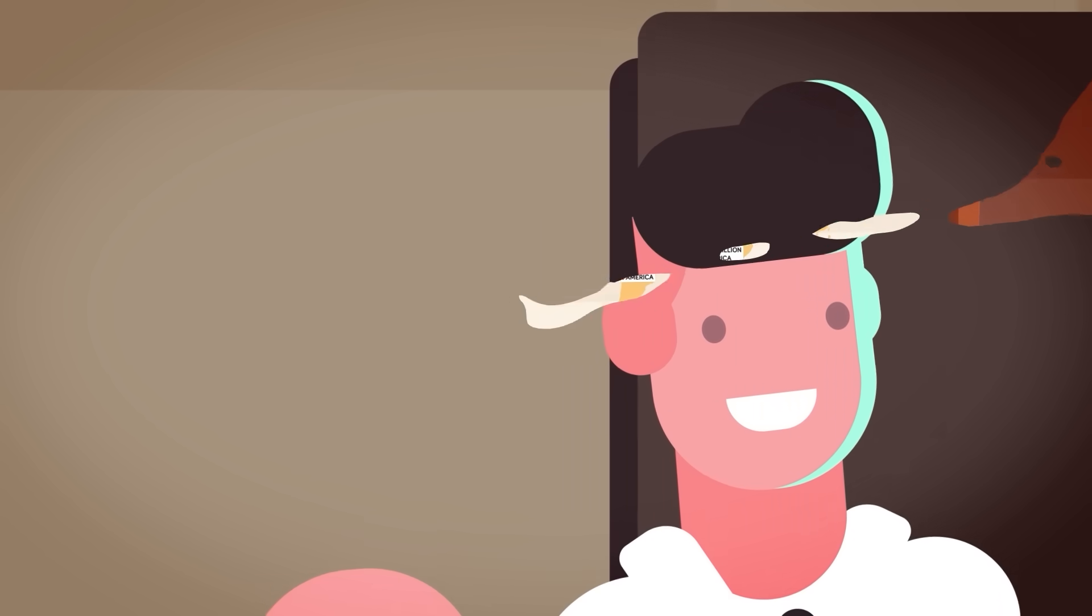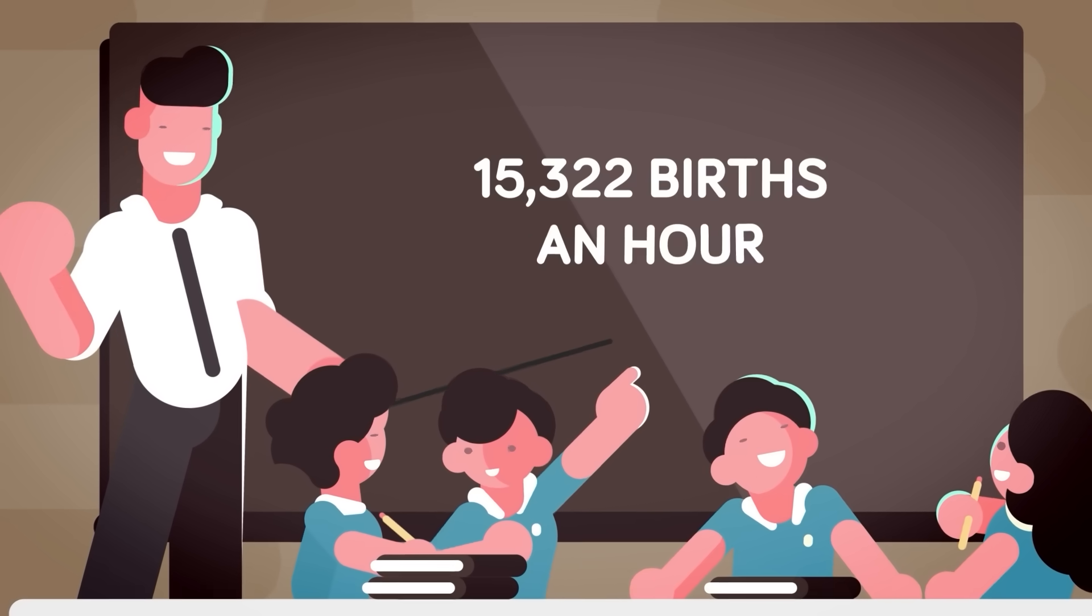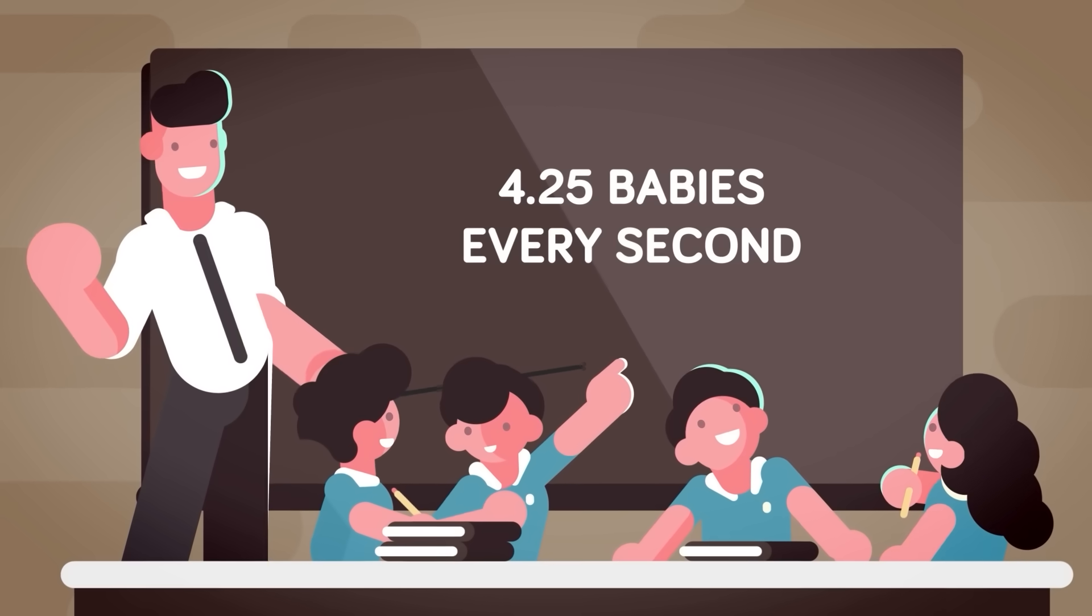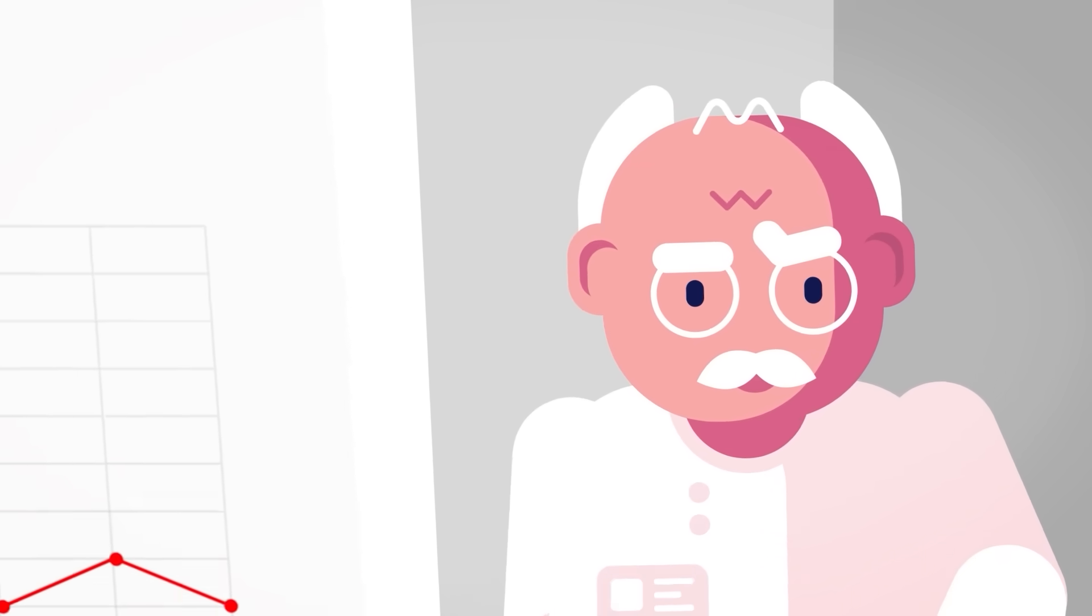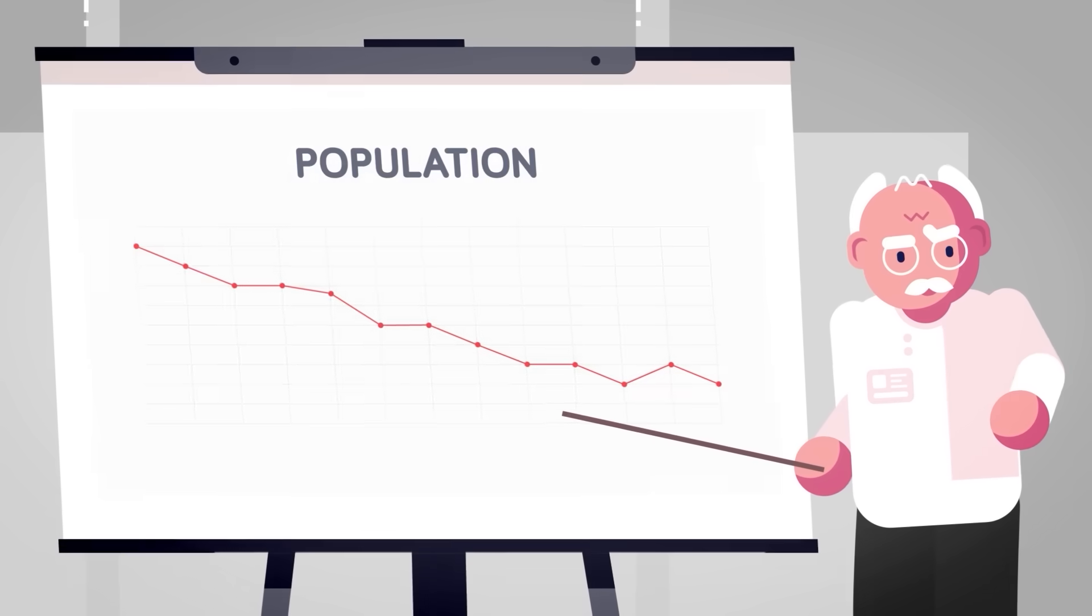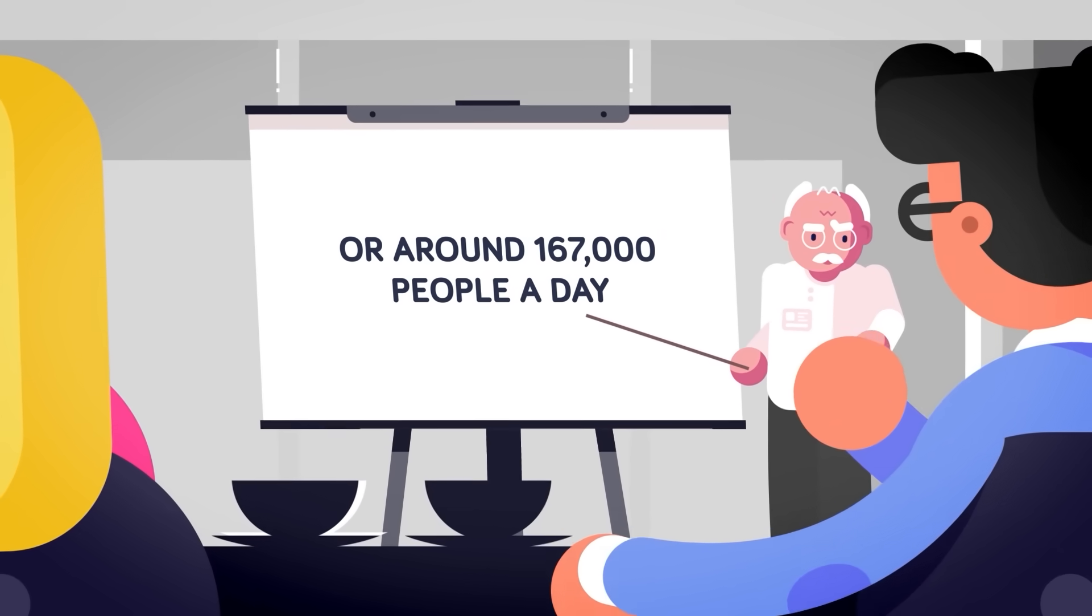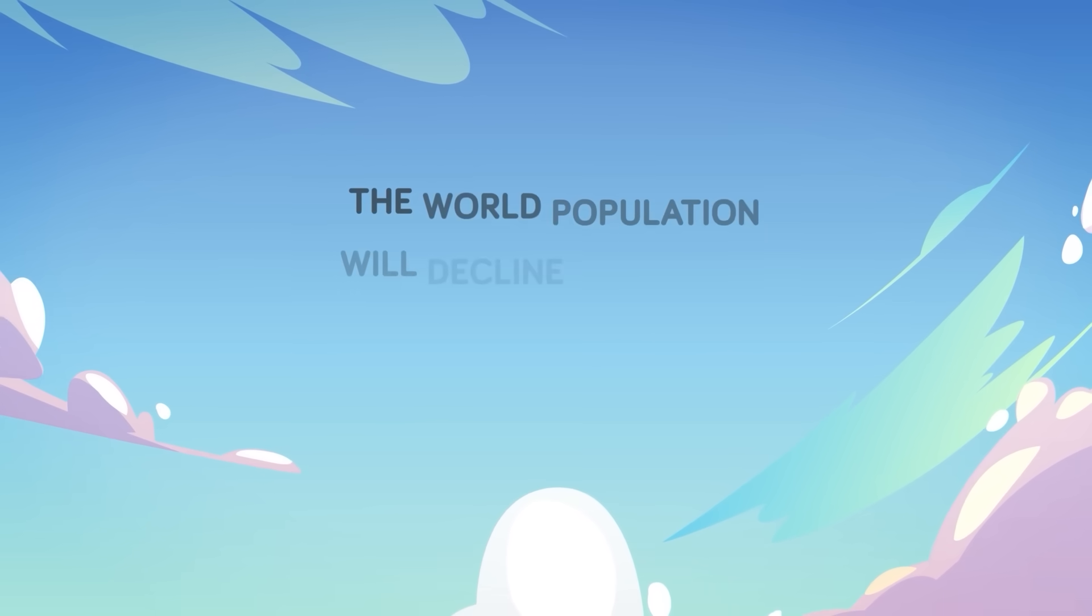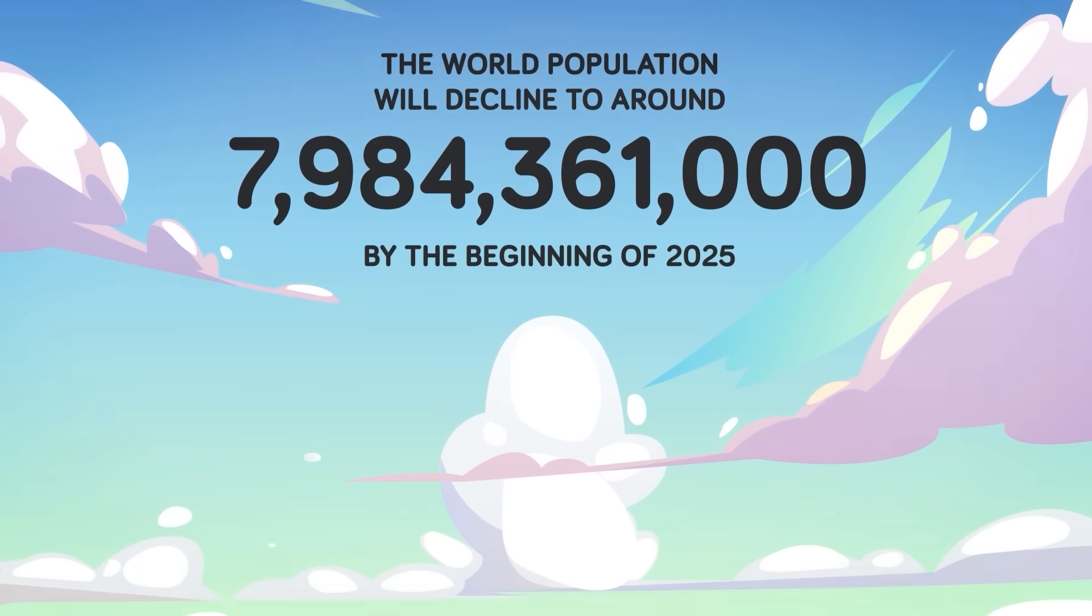On average, 367,726 babies are born every day. That is 15,322 births an hour, 255 a minute, or four and a quarter babies every second. That's a lot of babies, which is why the population has been increasing since the dawn of humanity. If no babies were born for one whole year, the population would obviously decline, as just because there are no births doesn't mean there won't be any deaths. 60.95 million people are expected to die in 2024, or around 167,000 people a day. Since there won't be any new births to offset the number, the world population will decline to around 7,984,361,000 by the beginning of 2025.